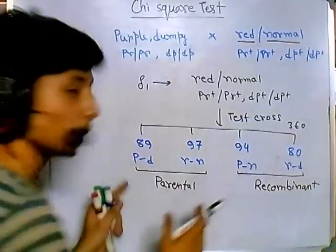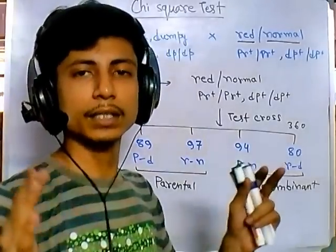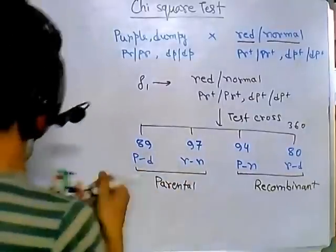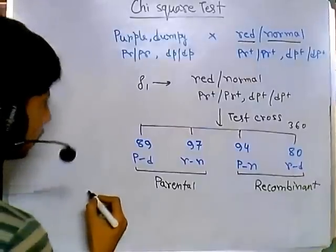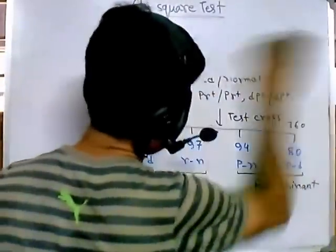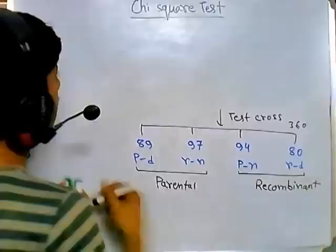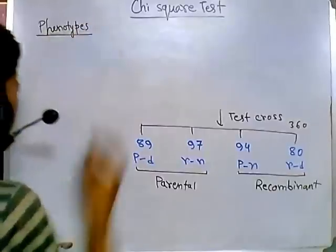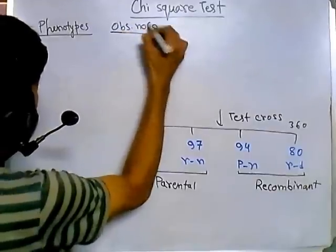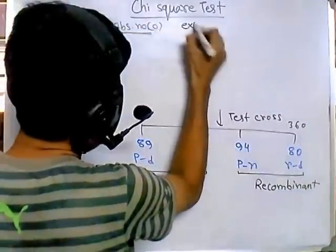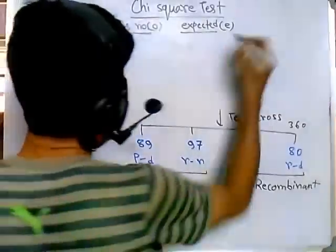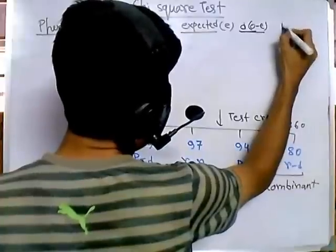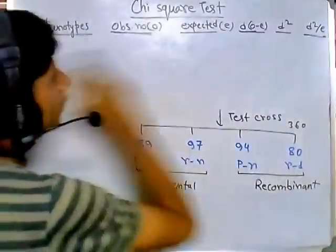Now that we understand the concept and have the numbers, the next step is to construct the chi-square table. The chi-square table is based on several data columns: the phenotypes, then the observed number of each phenotype (small o), the expected number of phenotype (small e), the difference d which is o minus e, then d squared, and finally d squared divided by e.